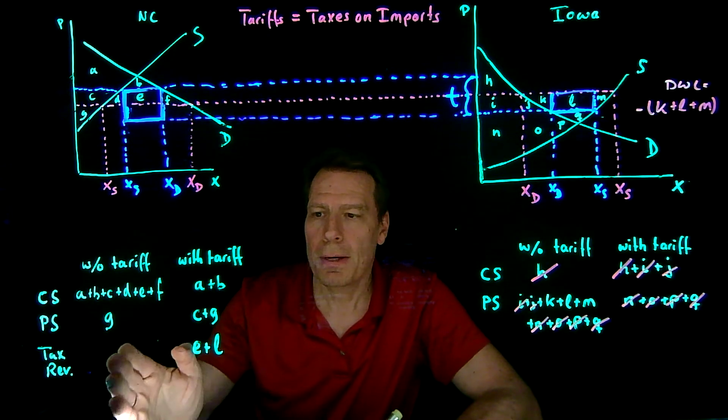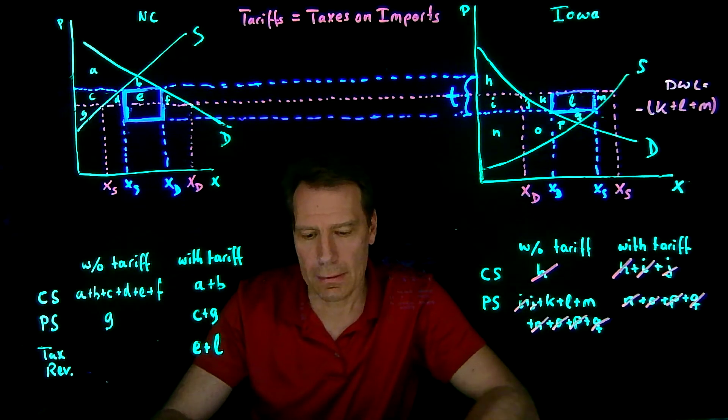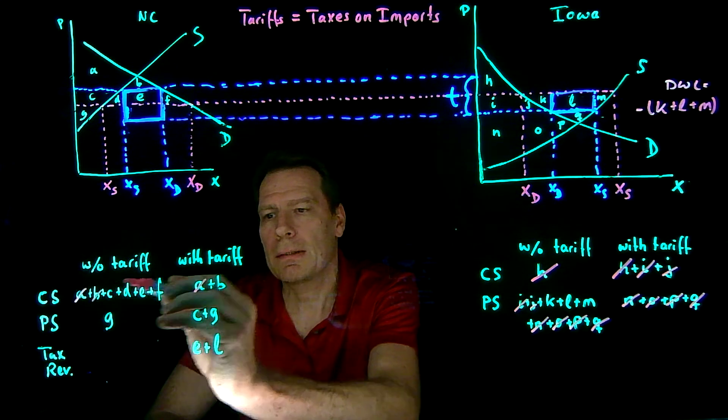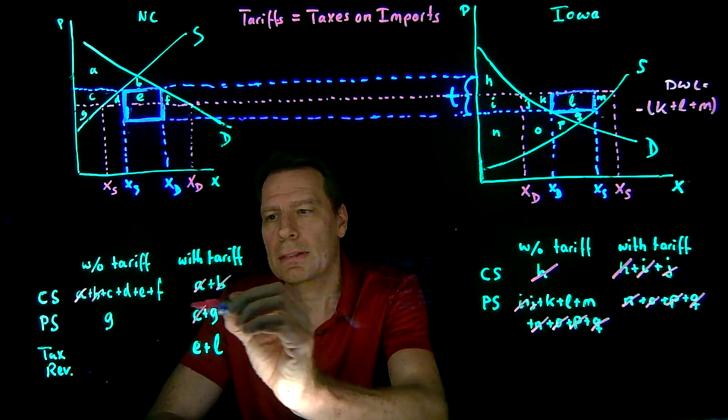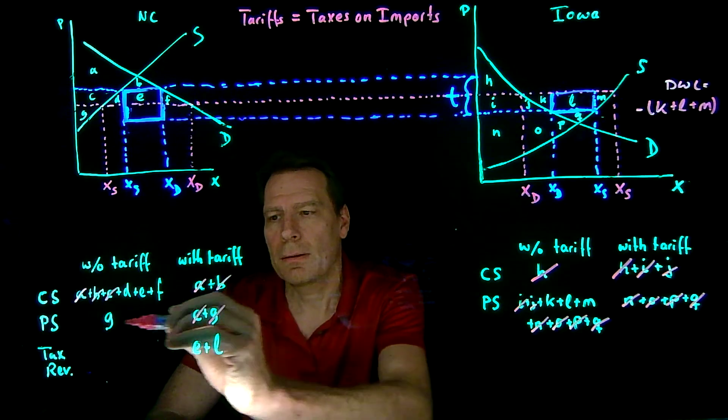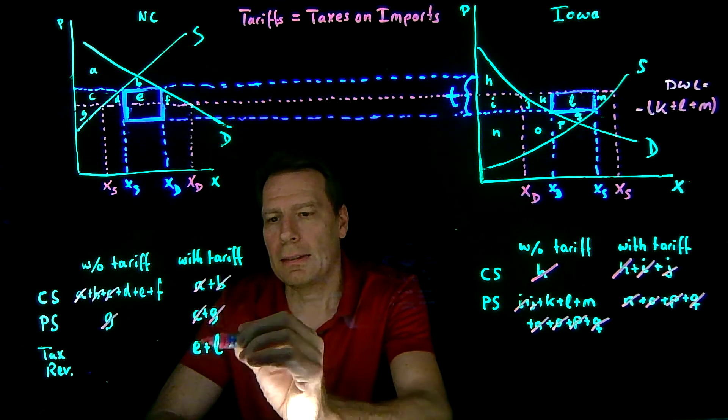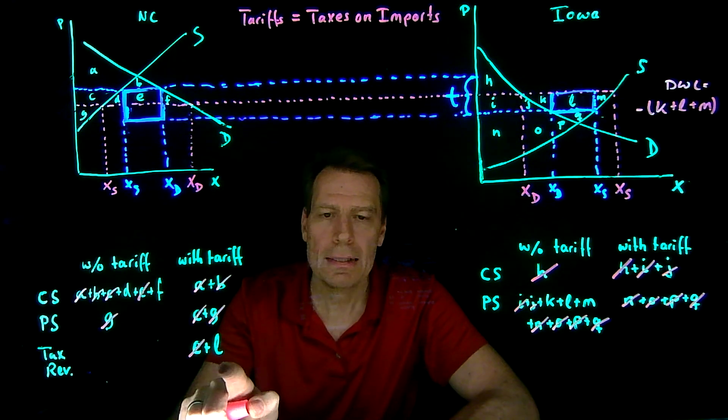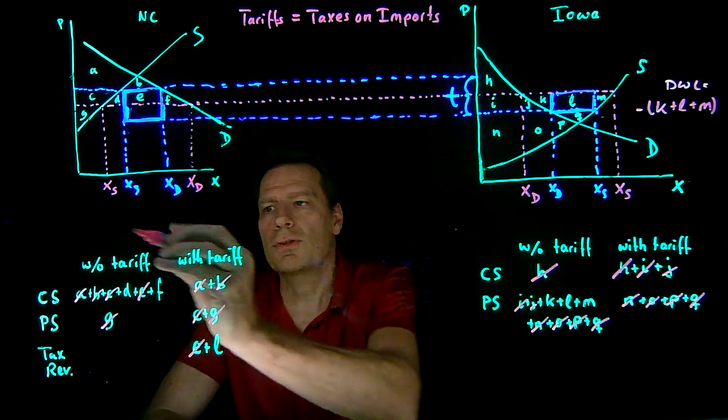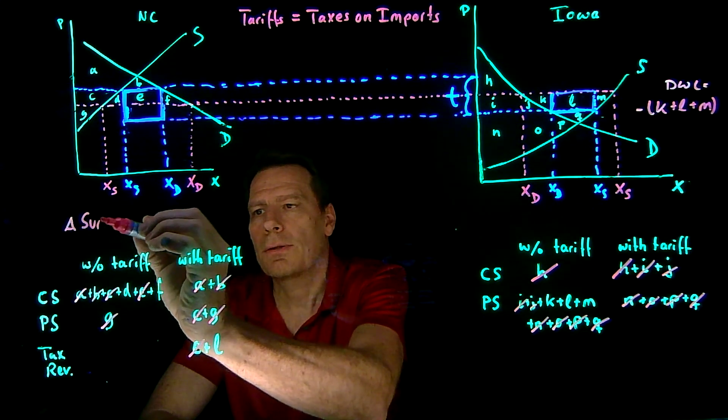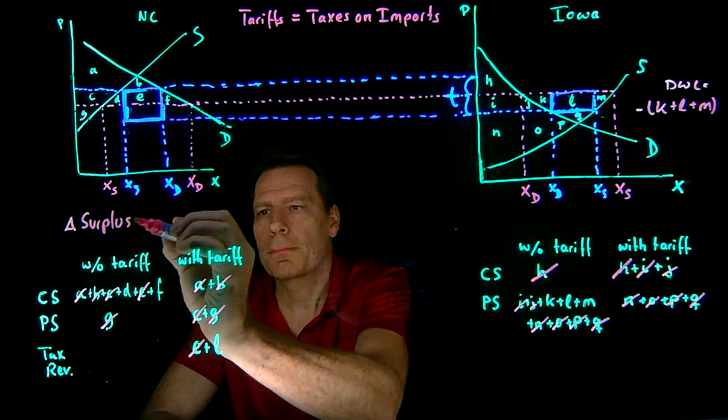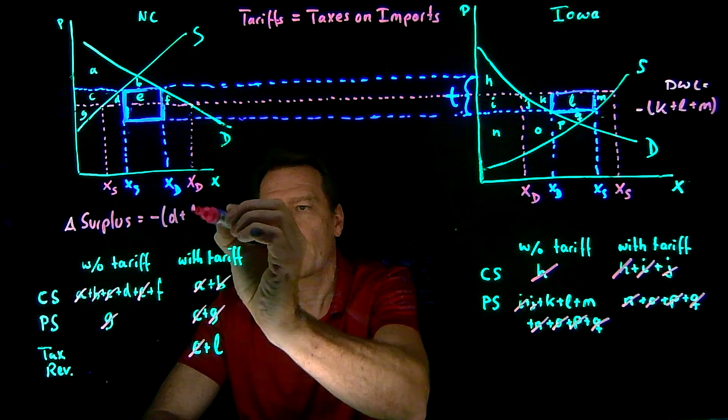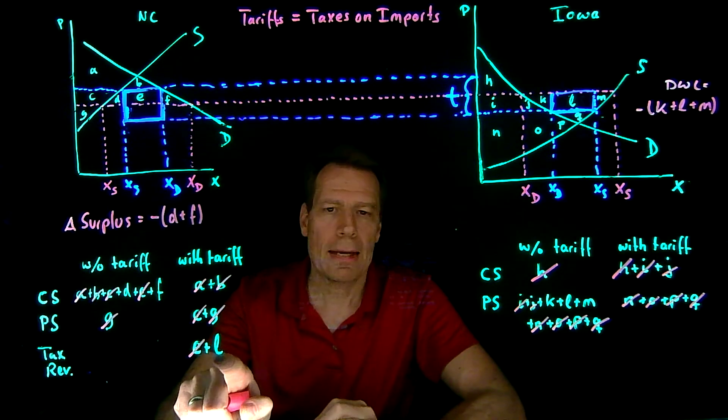So now we can compare the two columns. We get an A in both cases, so we don't lose that. We get a B in both cases. We get a C in both cases, and a G, and an E. But we're losing D and F, and we're gaining L. So the change in surplus in North Carolina is equal to the loss of D and F and the gain of L.